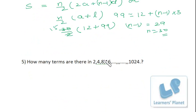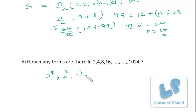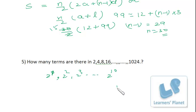This problem is from geometric progression: 2¹, 2², 2³, ..., 2¹⁰. There are 10 terms here, which is pretty simple to see.